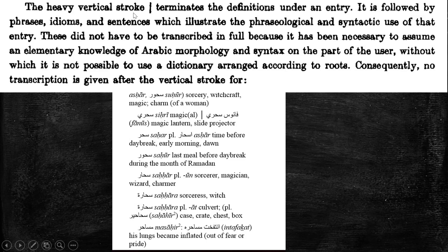He says the heavy vertical stroke — which is this line, and we'll explain that a little bit later — the heavy vertical stroke terminates the definition under an entry. So he's telling us that whenever we see this line, that means the definition has stopped; there's no definition beyond this point. It is followed by phrases, idioms, and sentences which illustrate the phraseological and syntactic use of that entry.